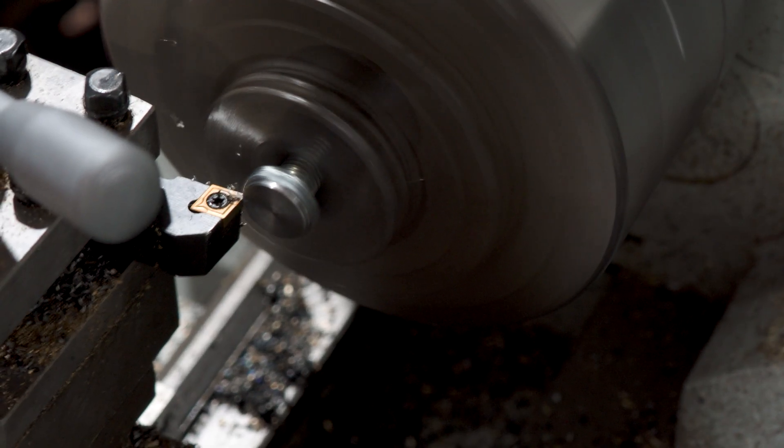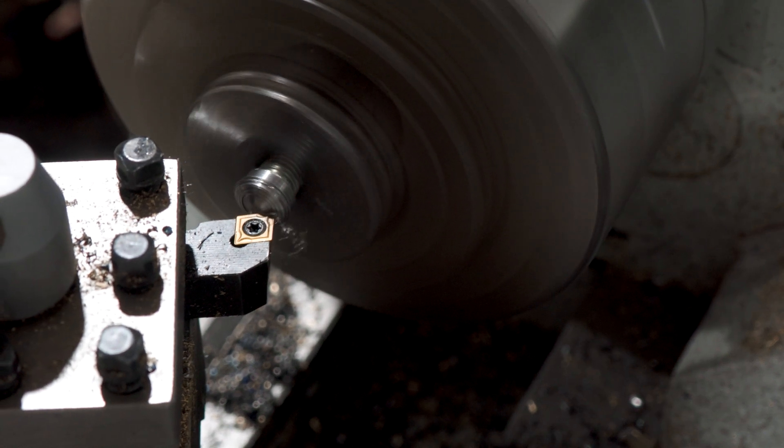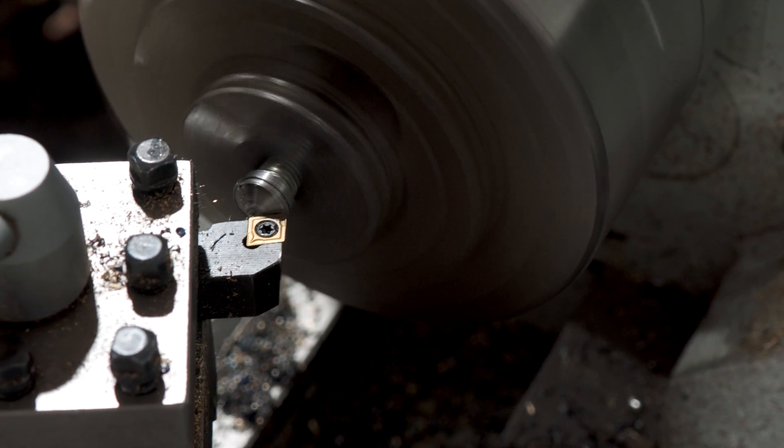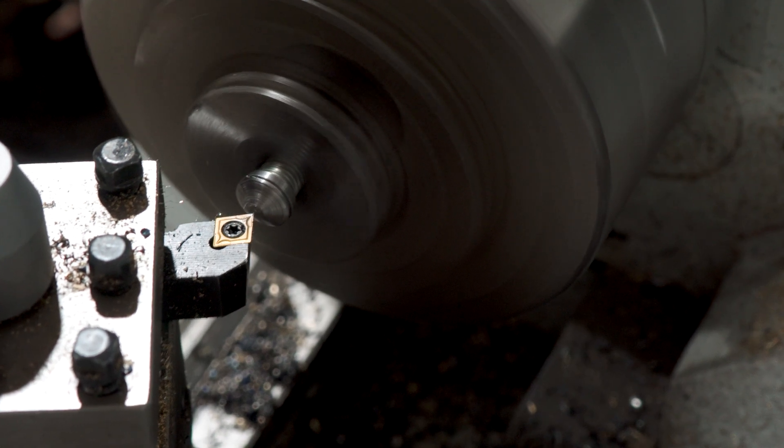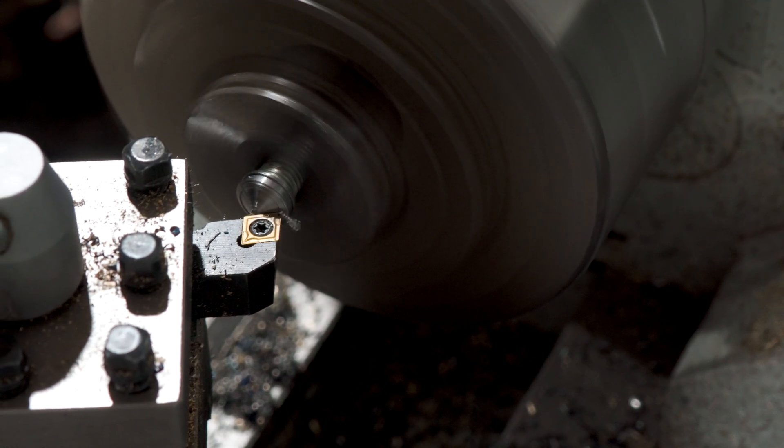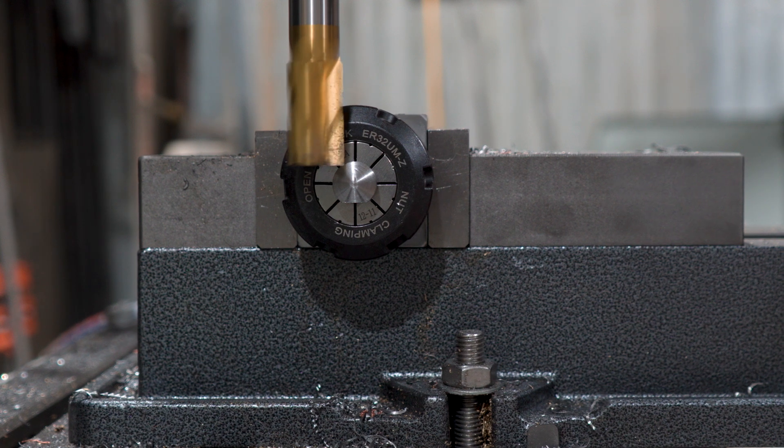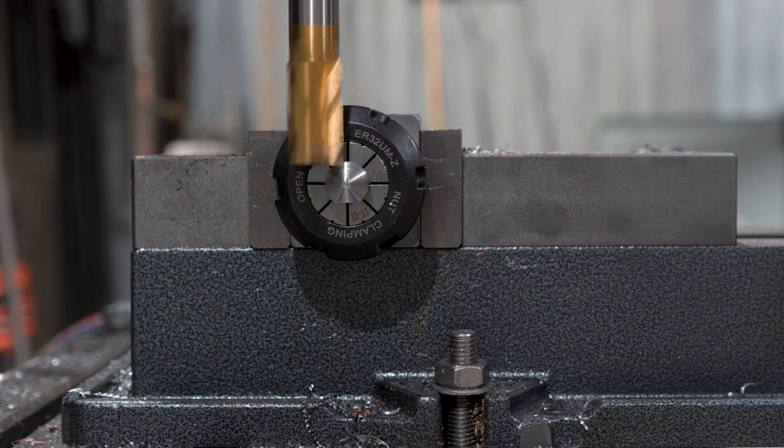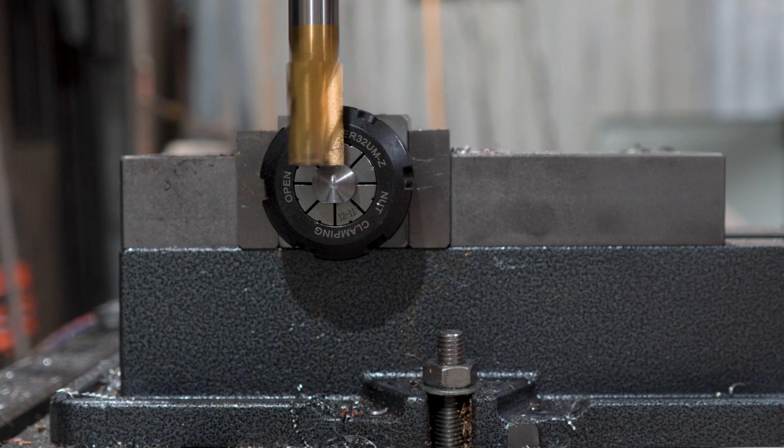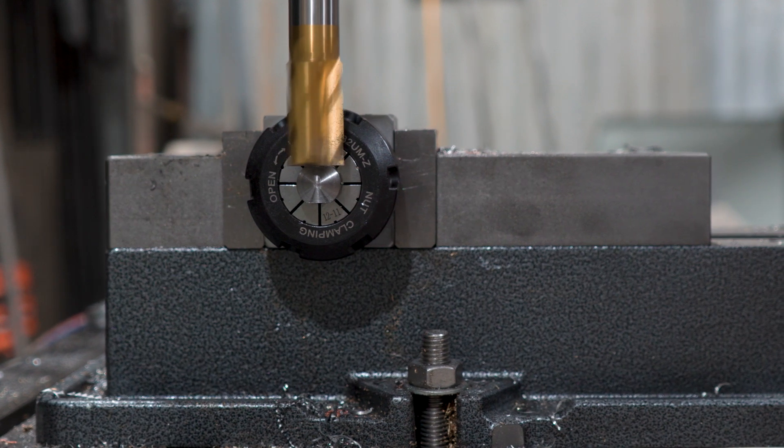For the bolt that's going to hold this all together, I'll just turn down a bolt head to be smaller than the body diameter so it doesn't foul on anything in use. Then add a little bit of taper to the end to make it feel nice in the hand. And then back over to the mill in a collet bolt block to machine some flats for a spanner. And this little guy can go over with the rest of the parts.